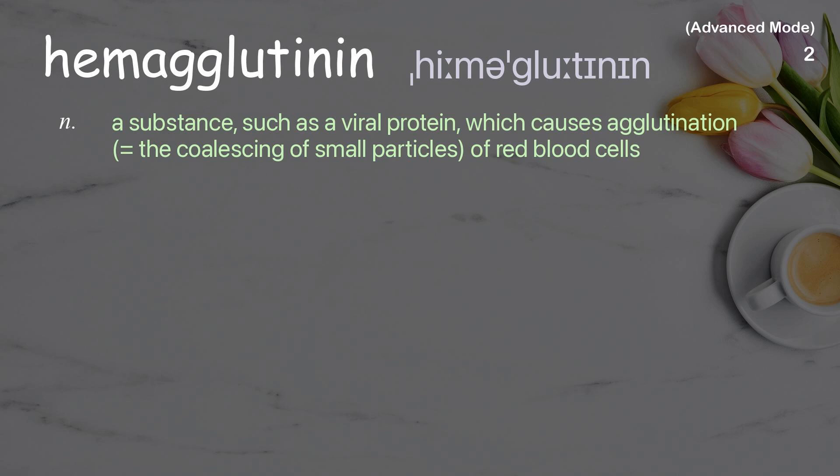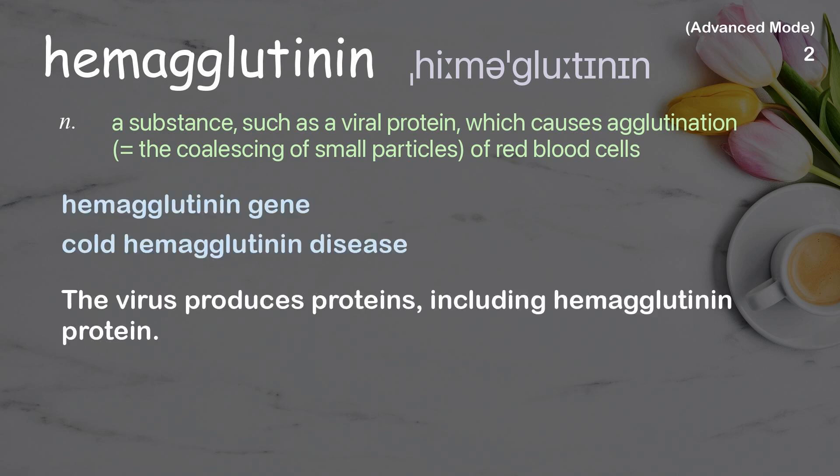Hemagglutinin. A substance, such as a viral protein, which causes agglutination — the coalescing of small particles of red blood cells. Examples: Hemagglutinin gene. Cold hemagglutinin disease. The virus produces proteins, including hemagglutinin protein.